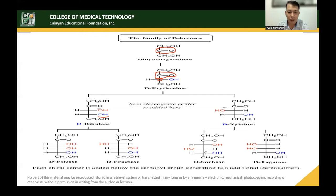From D-xylulose, adding one more carbon generates D-sorbose and D-tagatose — both 6-carbon ketohexoses. Each chiral center added below the carbonyl group generates two additional stereoisomers, as seen throughout the ketose family tree.